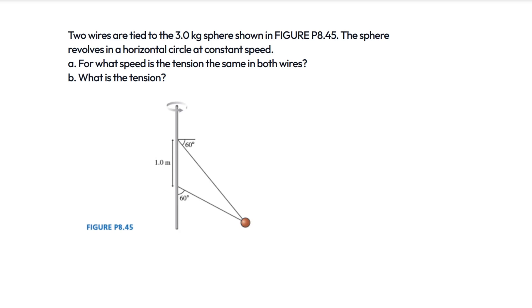Two wires are tied to the 3kg sphere shown below. The sphere revolves in a horizontal circle at a constant speed. For part A, we're asked to find for what speed the tension is the same for both wires.